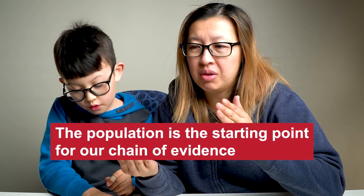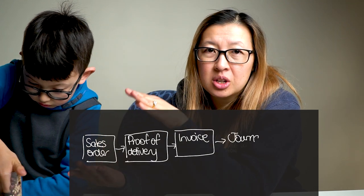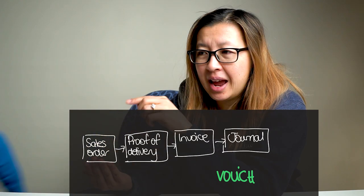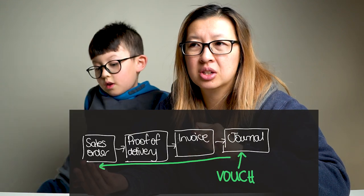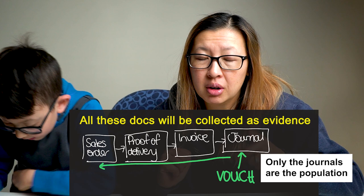The population is really important because it is where we start gathering our evidence. If I'm vouching and I'm going to start at the end and work backwards through different documents, then my population isn't all of the documents — instead, it is just that starting point. The population isn't everything that I'm going to capture, but it's the starting point of the information I want to collect. You can't identify that population until you know what the procedure is. Once you've described the procedure — whether you're going to trace, vouch, or inspect — then identifying the population is really easy because it falls out of the description of the procedure itself.